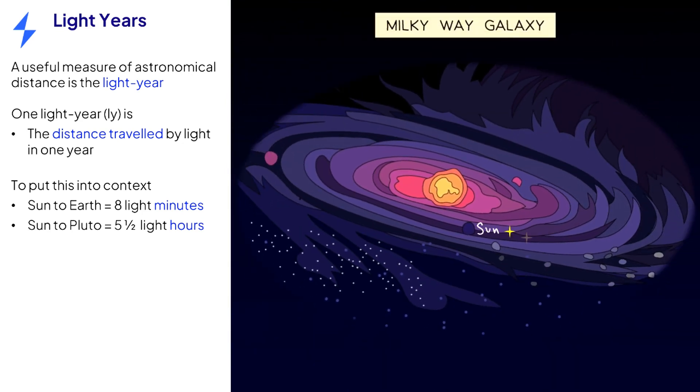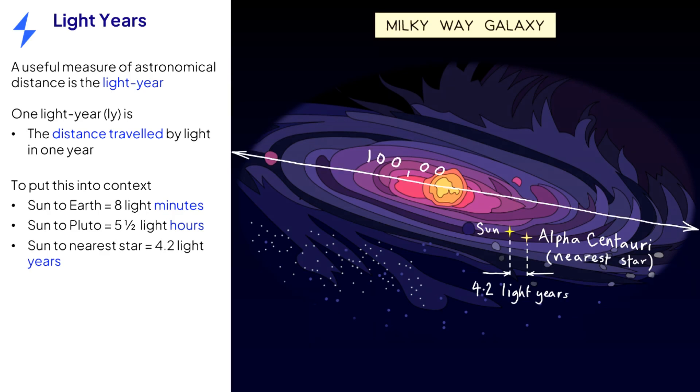After the sun, the nearest star to us is Alpha Centauri. The distance between the sun and Alpha Centauri is about four light years. The size of our home galaxy, the Milky Way, is a hundred thousand light years.